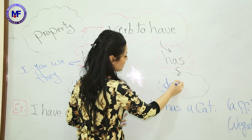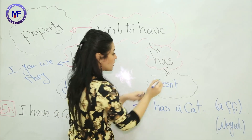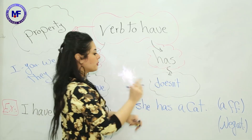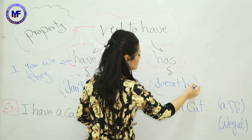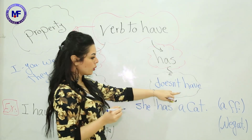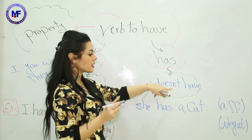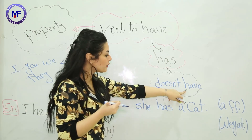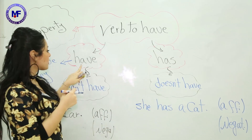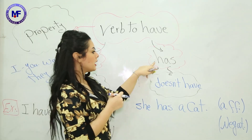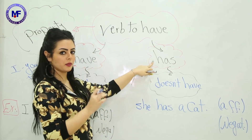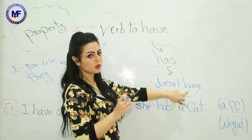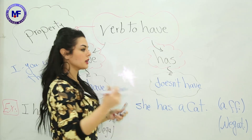What about 'has'? 'Has' in the affirmative form will be 'doesn't have' in the negative — not 'doesn't has'. Remember it will be 'doesn't have', because 'doesn't' steals the S, so the verb goes back to the infinitive 'have'.